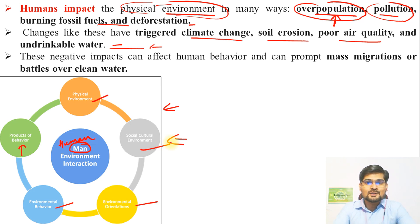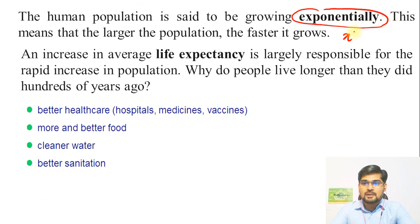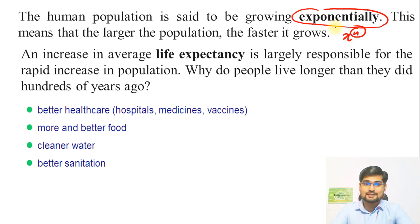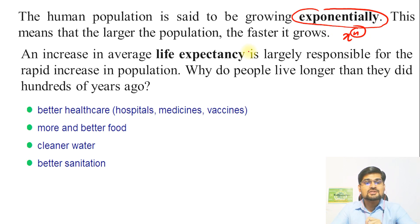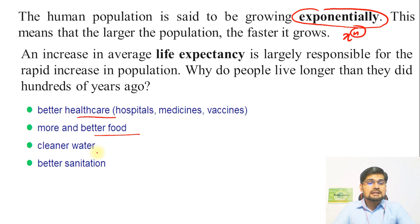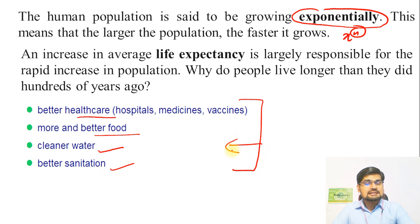Human population is said to be growing exponentially — that is, x to the power n. This exponential growth is what Malthus talked about in his population theory in 1798. Why are we growing so fast? Our life expectancy on average has increased because of better healthcare, more and better food, clean water, and better sanitation facilities. As we have grown in technology, our life expectancy has increased.